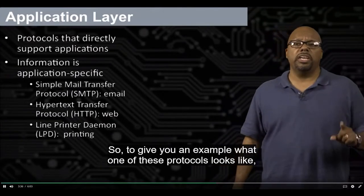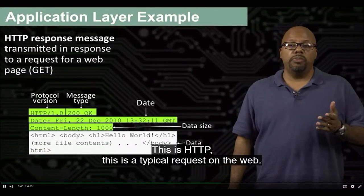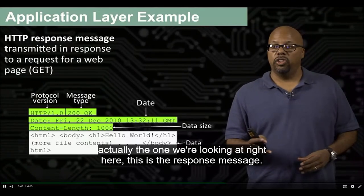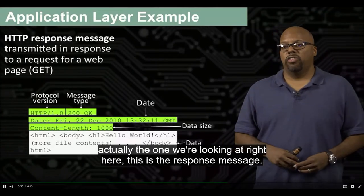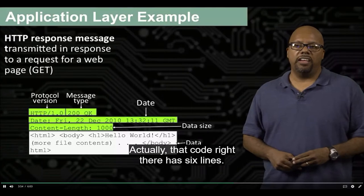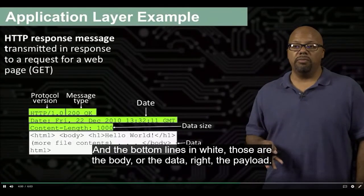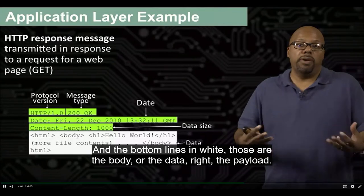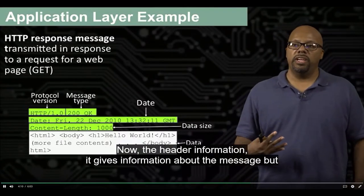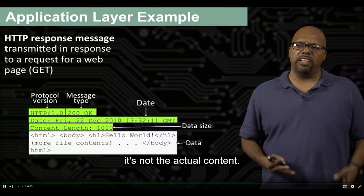To give you an example of what one of these protocols looks like, let's look a little at HTTP. This is a typical request on the web. It has several lines — that code right there has six lines. The top three lines in green are the header, and the bottom lines in white are the body or the data — the payload. The header gives information about the message, but it's not the actual content.